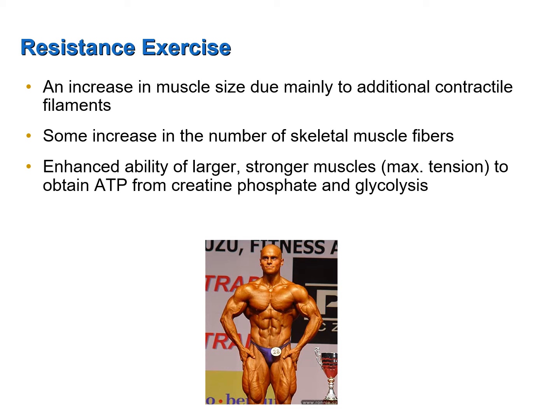There is also enhanced ability to obtain ATP from creatine phosphate and glycolysis. So in response to resistance exercise, skeletal muscles grow larger, they also grow stronger, meaning there is an increase in the maximum amount of tension that they can produce, and they can also obtain more ATP from creatine phosphate and glycolysis.